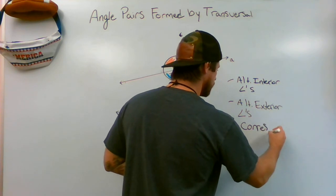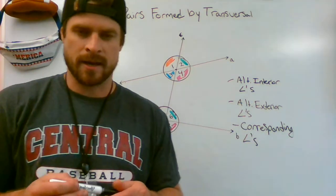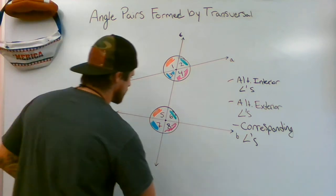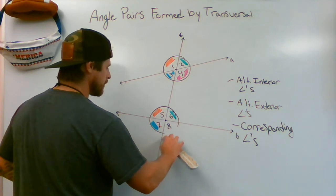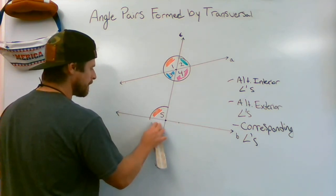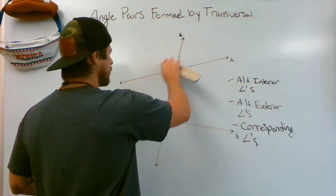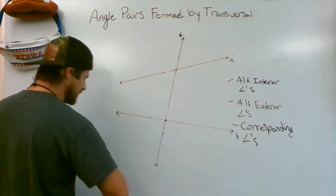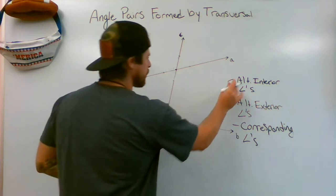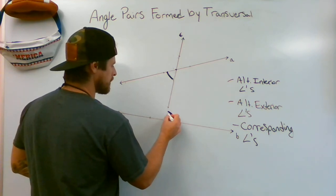Let's ask a couple of practice questions. Can you give me a set of alternate interior angles? They might ask you to mark it on the image or give the angle number. The words in the title are dead giveaways — interior tells you inside, exterior tells you outside. For alternate interior, go to the left side of the transversal inside, then the right side inside — those are your two angles.